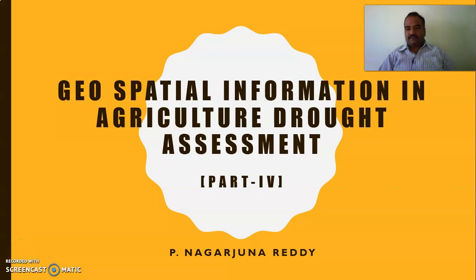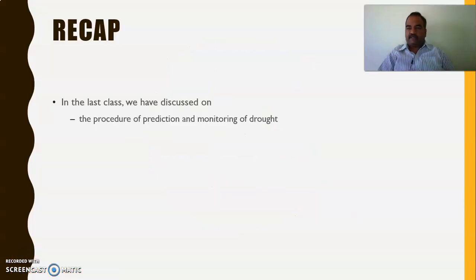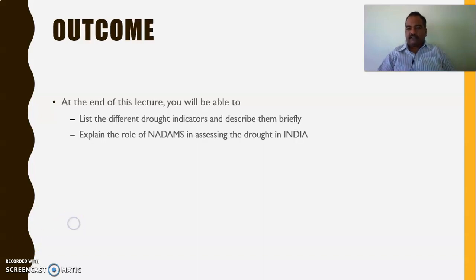Welcome back to the current topic of geospatial information in agricultural drought assessment. In the last video lecture, we discussed the procedure for prediction and monitoring of drought. In the current video lecture, I hope you will be able to list the different drought indicators and describe them briefly, and explain the role of NADAMS in assessing drought in our country.